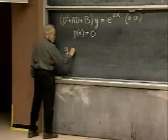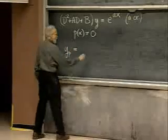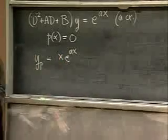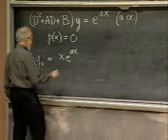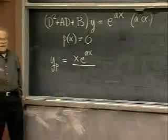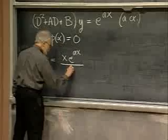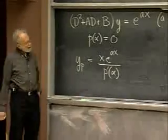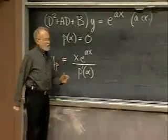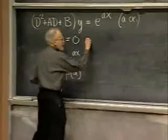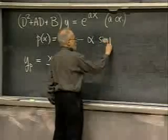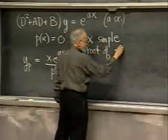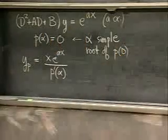If p(A) = 0 but p'(A) ≠ 0 — that is, A is a simple root — then y_p = x·e^(Ax) / p'(A). What if p'(A) is also zero? That happens when A is a double root. In that case, y_p = x²·e^(Ax) / p''(A). And for a triple root you'd need x³ divided by p'''(A) with a factorial, though we won't dwell on that.